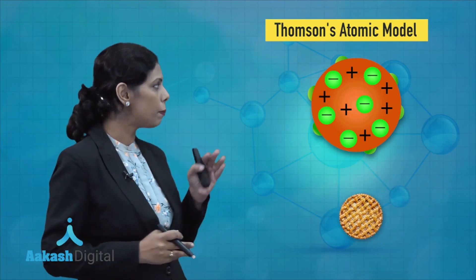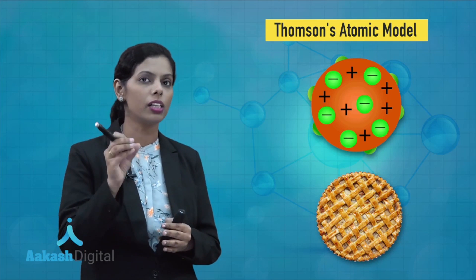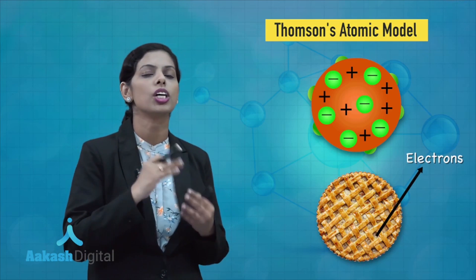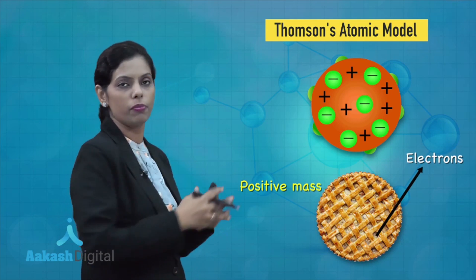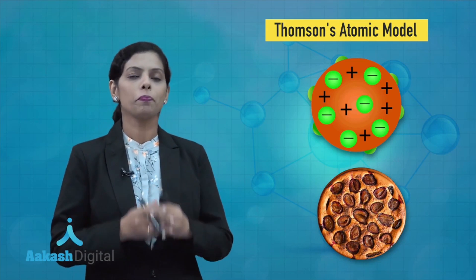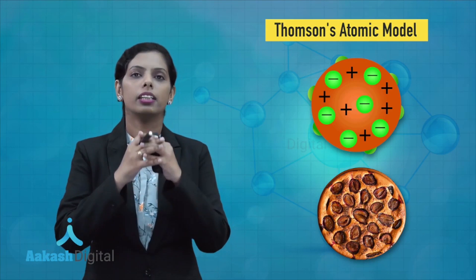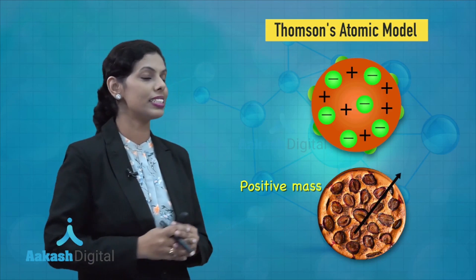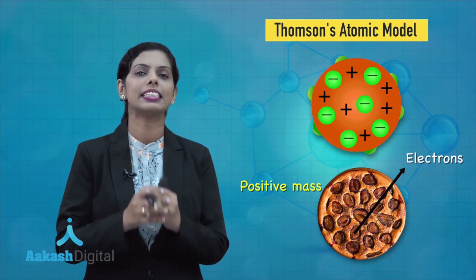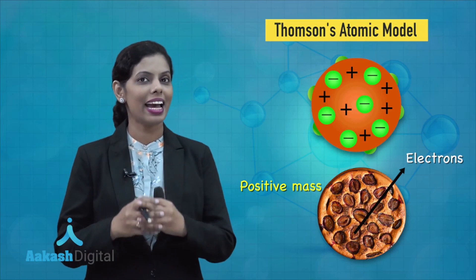If we talk about the apple pie model, the particles of apple present in it are like the electrons, and the whole pudding is just like the positive mass. In the similar manner, the plum pudding model can also be explained — the pudding shows the positive charge present, and the raisins present in it are like the electrons. Simply, Thomson's model states that the whole atom is a positive mass and electrons are embedded in it.